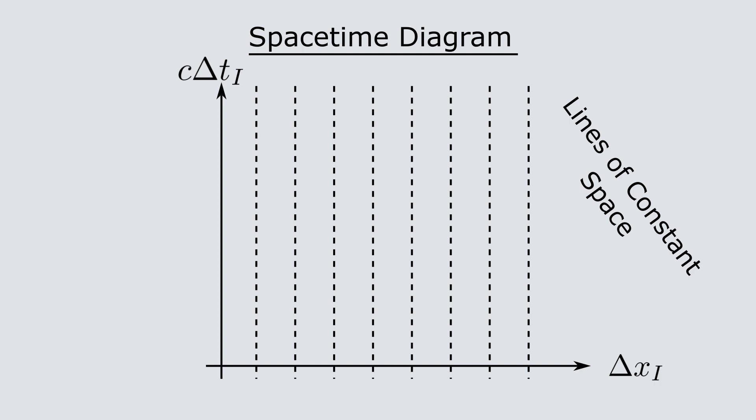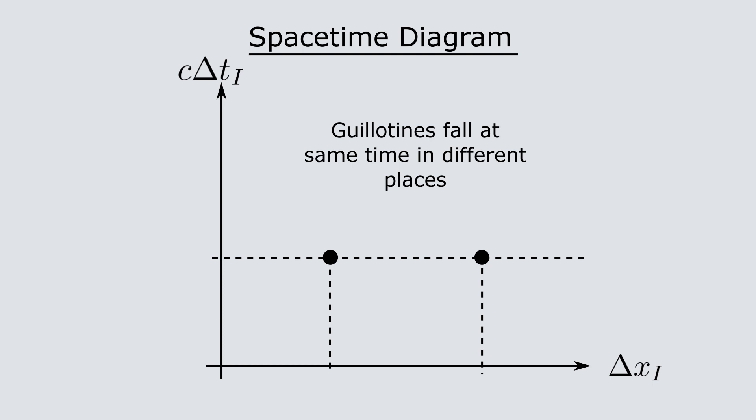Now, on this diagram, we can plot where and when the two guillotines fall as points at the same value of delta ti, but separated in delta xi. To relate this to what Albert sees, we know that we have to use the Lorentz transformation.